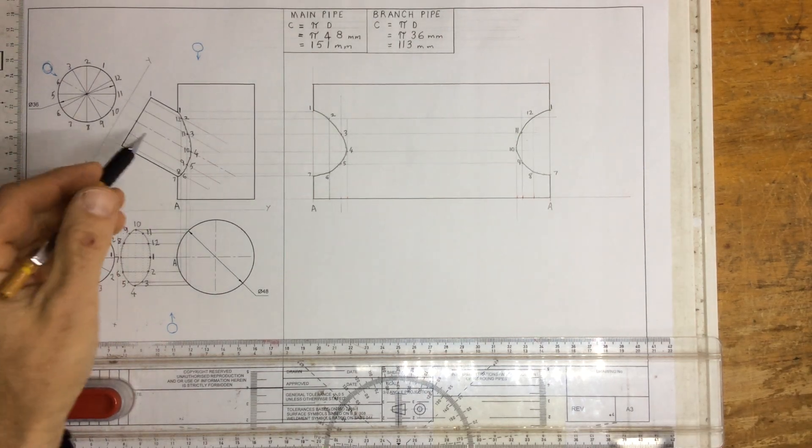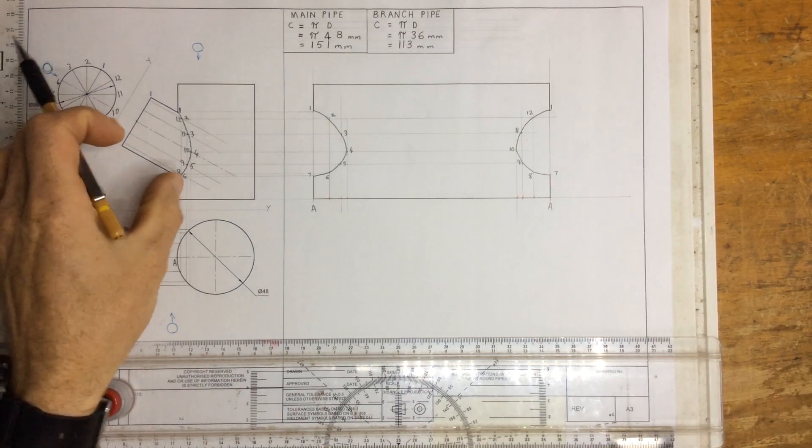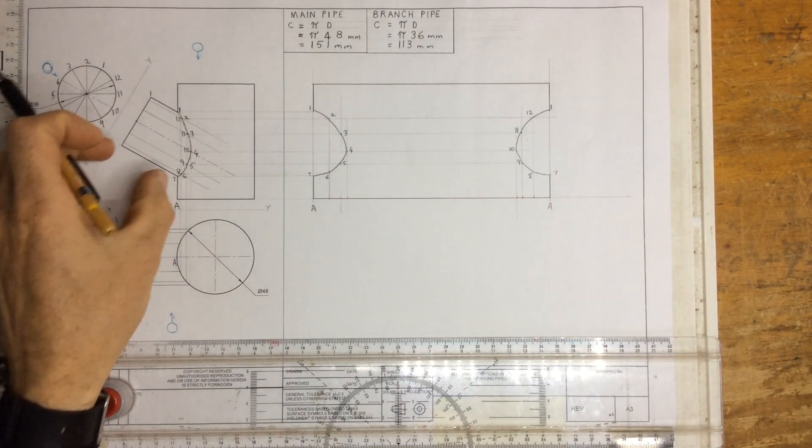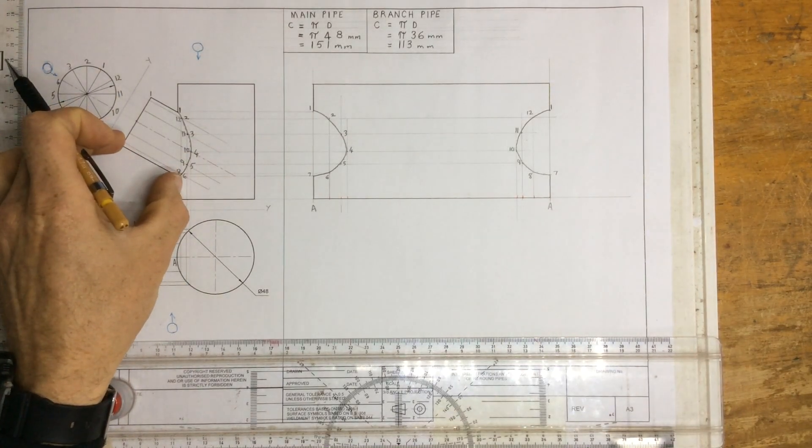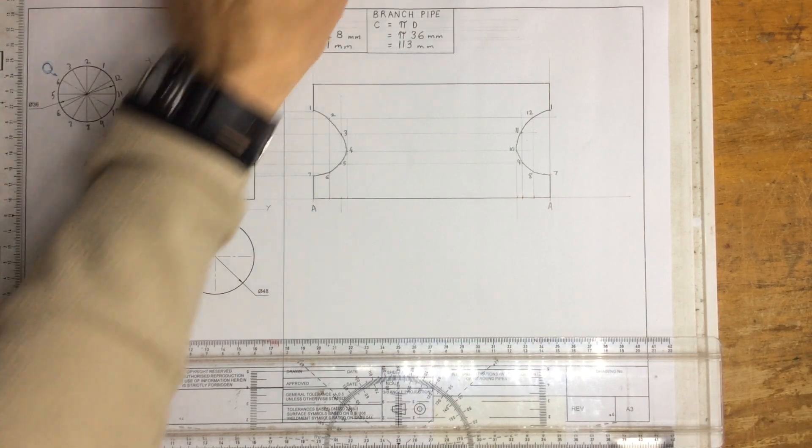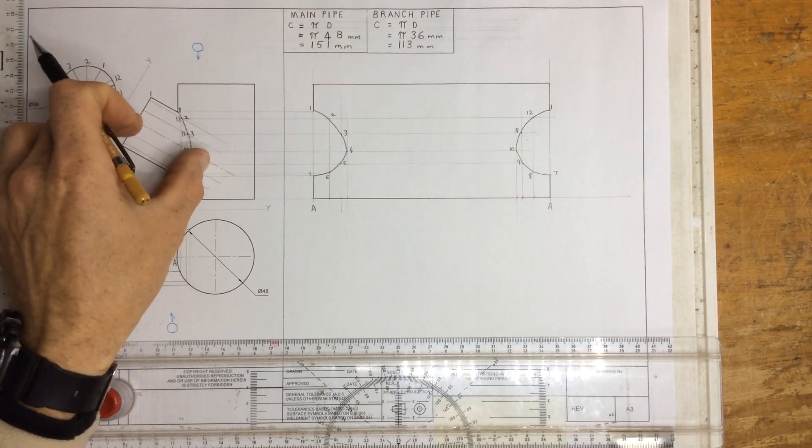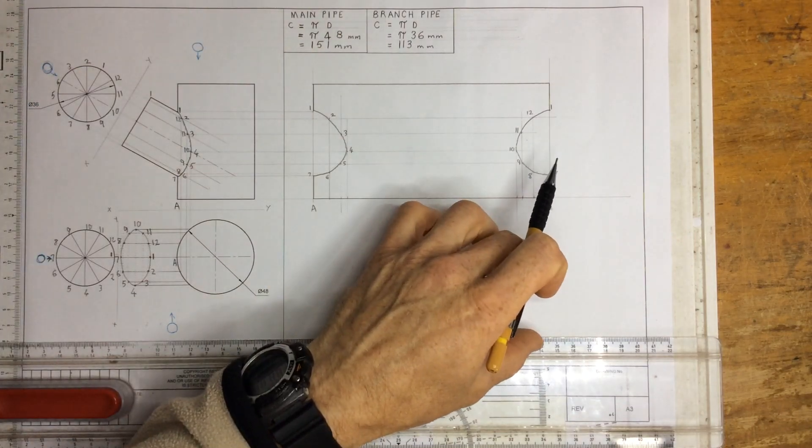In this video, we're going to do the branch pipe for this drawing over here. Normally what we do is just project lines out, but unfortunately this page doesn't have enough space for that, so I'm going to have to transfer that information down over here.